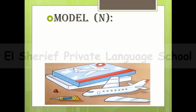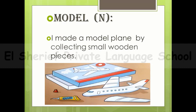The next word: model. From the picture, the word model means it is an artificial thing that you try to copy from a big one — a small replica. For example: I made a model plane by collecting small wooden pieces.